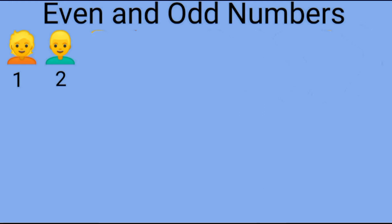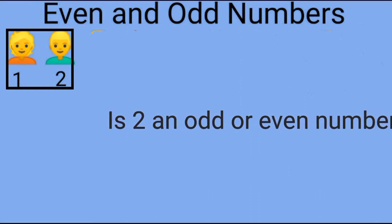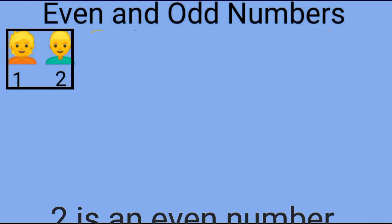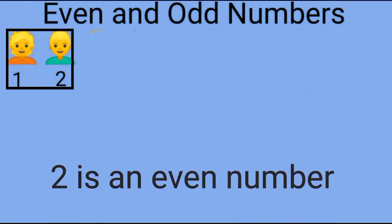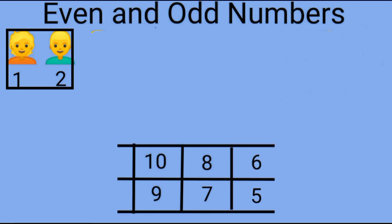Now tell me children, what would happen if there were only two students standing in the class? Have all the students been paired up? Yes, all two students have been paired up. Then tell me children, is two an odd or even number? Yes, two is an even number.